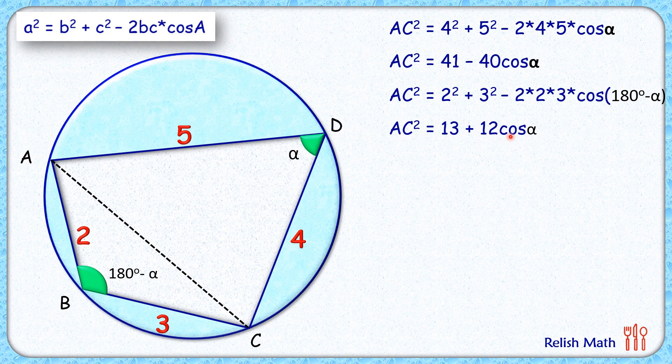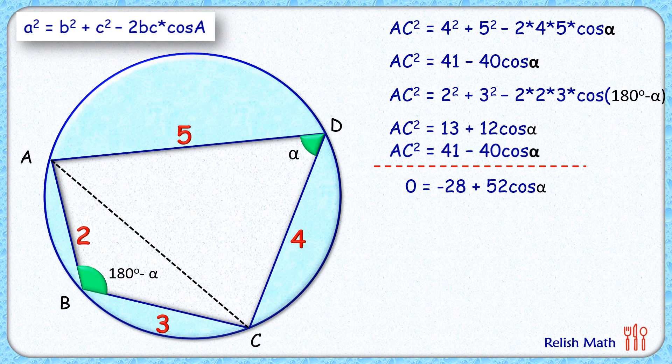Now from this second equation, we'll subtract our first equation. On subtracting, the AC squared on both sides will get cancelled. So, 13 minus 41, that's minus 28, and 12 cos alpha minus of minus 40 cos alpha, so that becomes plus 52 cos alpha. Simplifying, we'll get cos alpha as 28 by 52.